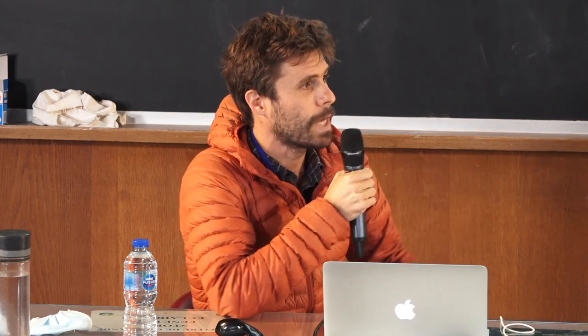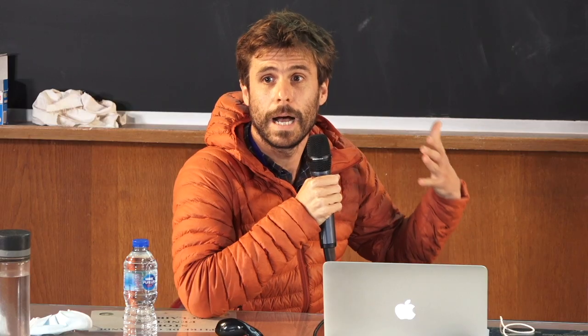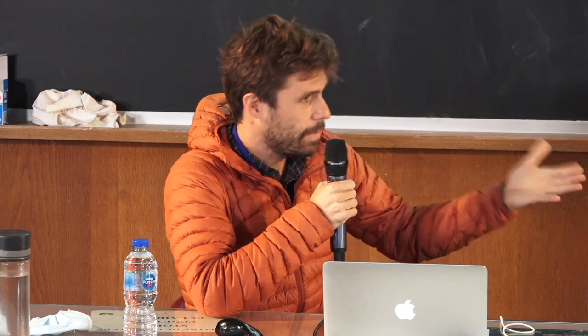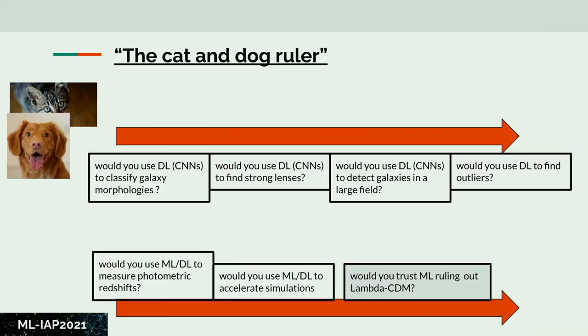Photometric redshift has attracted lots of interest and is a nice case where lots of people have tried machine learning, but state of the art is still template fitting — and we must ask ourselves why. Going further: can you accelerate simulations? We've seen generative modeling approaches to accelerate simulations, but you need to make sure your data fulfills some criteria and out-of-the-box things might be risky. I'll end with a question I don't have an answer to: would you trust machine learning to rule out Lambda-CDM at some point? Maybe. I'll leave that question open.